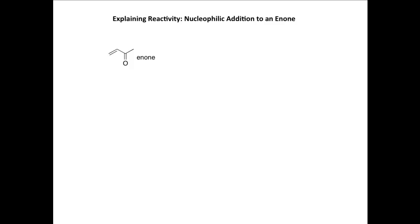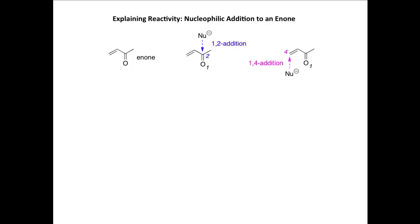Let's now look at explaining the reactivity of an enone — specifically, the position of attack of a nucleophile. As expected, the nucleophile can attack directly at the carbonyl group because the carbon attached to oxygen is delta-plus and electrophilic; this is called 1,2-addition, with the carbonyl carbon being the 2-position. Perhaps surprisingly, nucleophiles can also attack at the 4-position — the carbon atom at the end of the chain — which is called conjugate addition, or Michael addition if a carbon nucleophile is involved.